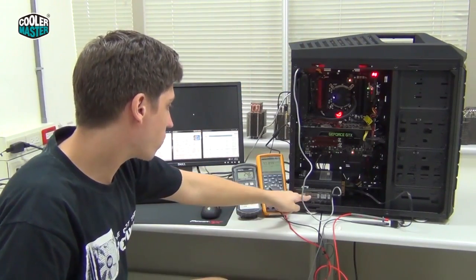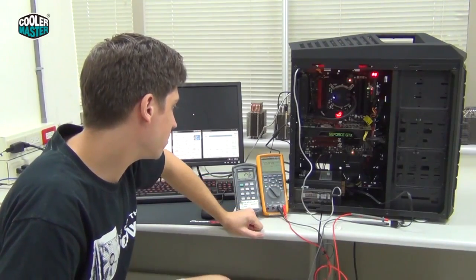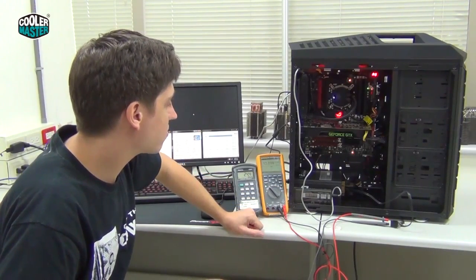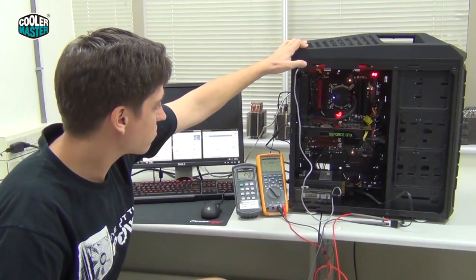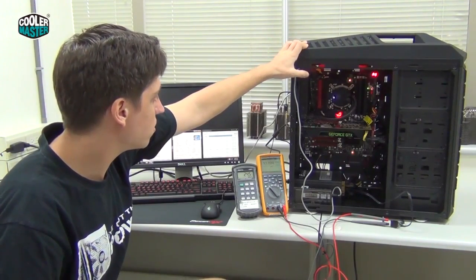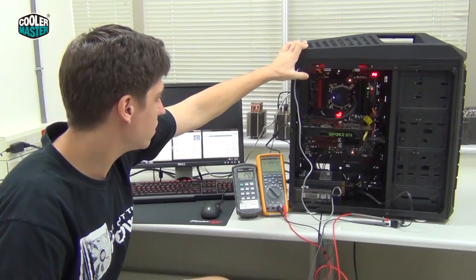We use a Kyoritsu AC-DC Digital Clamp Meter that lets us measure the power consumption of the motherboard, the part that feeds the CPU, so we know how much power the CPU is eating and how much heat it's producing.